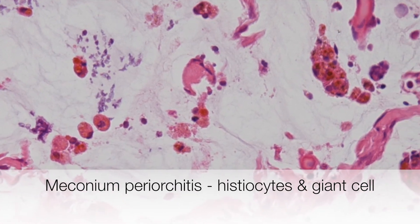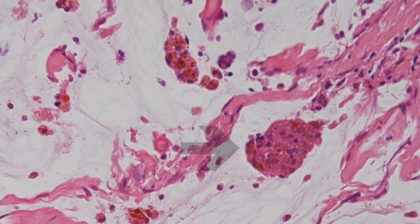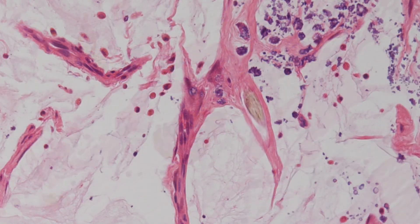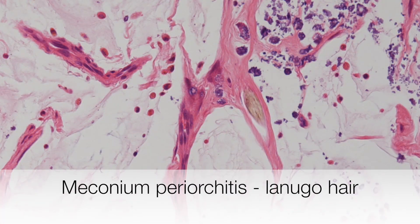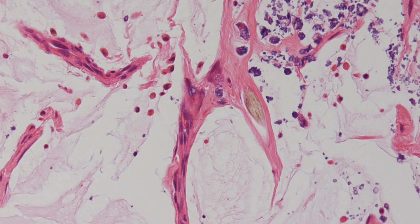Here are some pigment-laden histocytes — the pigment may be bile. And here is a foreign body type giant cell. So how do we know that this appearance is all caused by meconium? The clue is this hair shaft that is embedded in fibrous tissue, and this is a fragment of lanugo hair from the foetus. Amniotic fluid is ingested in utero together with the lanugo hairs that pass through the gastrointestinal tract, eventually forming meconium.